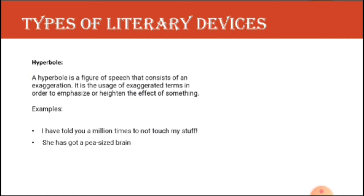The next one is hyperbole. Hyperbole is a figure of speech that consists of an exaggeration — using exaggerated terms to emphasize or heighten the effect of something. In daily conversation we use exaggerated words, like saying to a friend: 'I have been waiting for years for you in the garden' to convey the intensity of waiting. 'I have told you a million times not to touch my stuff' — nobody literally says something a million times. 'She has got a pea-sized brain' — this is hyperbole.